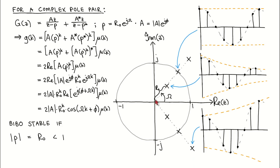If the distance of the pole from the origin of the z-plane is 1, then the impulse response is a sinusoidal signal with a constant amplitude, and if the distance of the pole from the origin is more than 1, then the impulse response is an exponentially increasing sinusoidal signal.